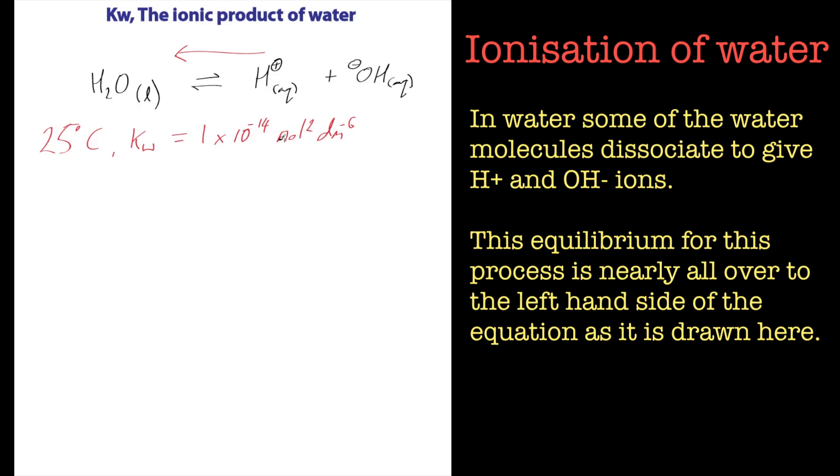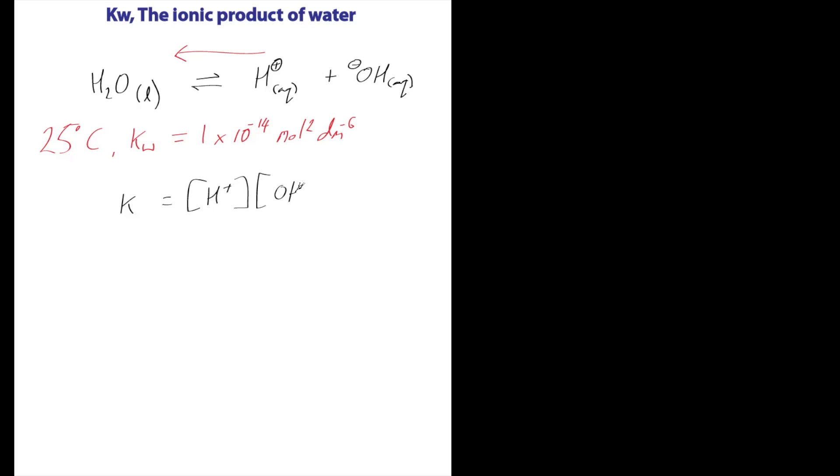Now that seems like a quite strange number. Well, let's have a look at the equilibrium constant. If we were going to write an equilibrium constant for water, it would be K equals concentration of H+ times the concentration of OH- divided by the concentration of H2O. That's an equilibrium constant equation.